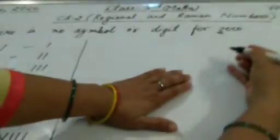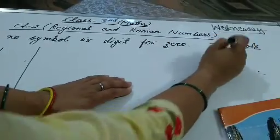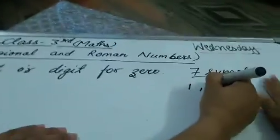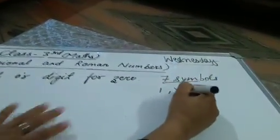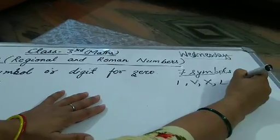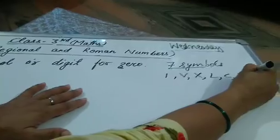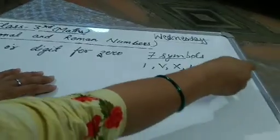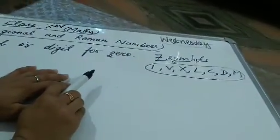Roman numerals में there are only 7 digits, जो कि previous videos में discuss कर चुके हैं. Only 7 symbols: I for 1, V for 5, X for 10, L for 50, C for 100, D for 500, and M for 1000. ये सिर्फ 7 symbols हैं Roman numerals में. इसके अलावा Roman numerals में 0 के लिए भी कोई symbol नहीं है.